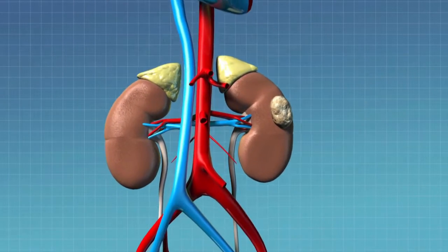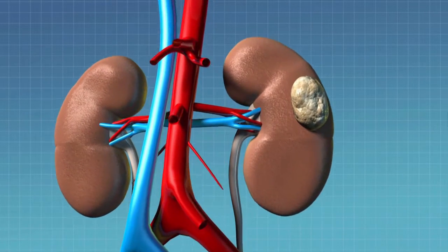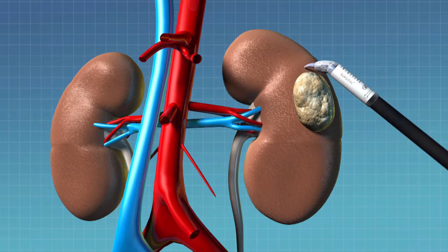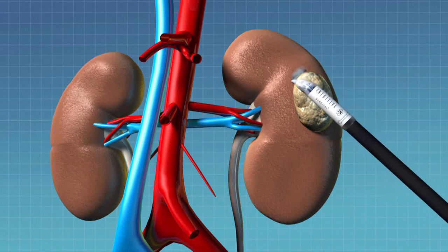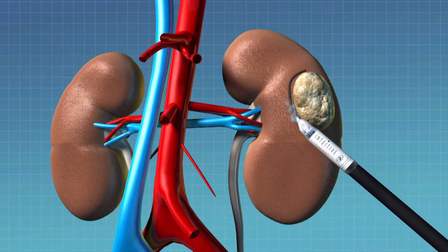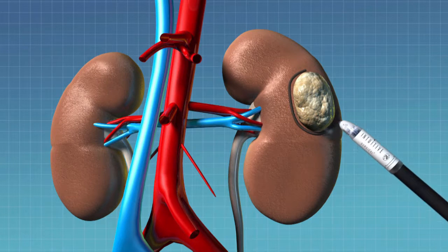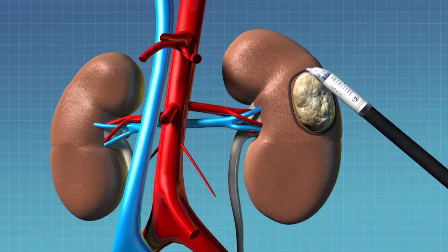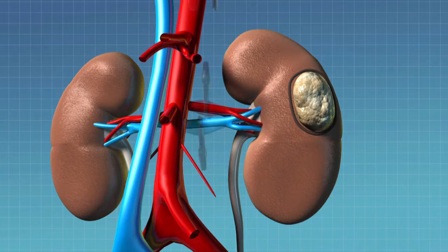So nowadays, the cutting edge treatment for a localized kidney tumor is a robotic partial nephrectomy. This allows the surgeon to use the laparoscopic technique through very small incisions and therefore prevents the morbidity of a large open incision for the patient while getting the tumor out of the kidney with the same measure of cancer control.